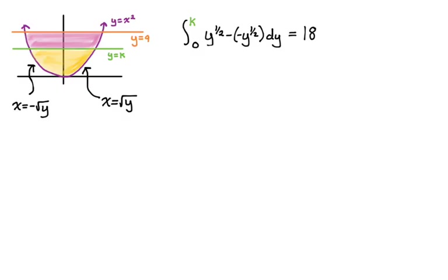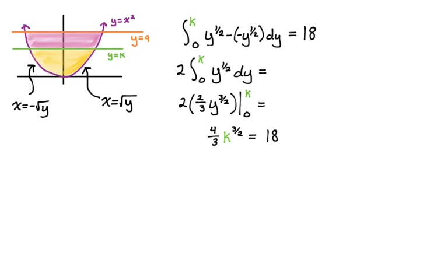This should equal 18, should be half of the total region. You can already kind of see this is going to be an easier integral to deal with. It's going to be 2 times the integral from 0 to k of y to the 1 half dy, by combining the integrand, and that should equal 18. So it's 2 times, reversing the power rule, 2 thirds y to the 3 halves from 0 to k. When you plug in 0 for y, it just goes away, so we just have to think about plugging in k. It's going to be 4 thirds k to the 3 halves should be equal to the 18 that we carried through.